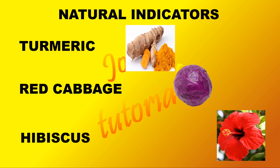There are many natural materials like litmus, extract of red cabbage, turmeric solution, and some colored petals of flowers like hibiscus — they are all used as indicators. Generally we prepare a solution of these materials, dip a paper in it, dry it in the shade, cut it into pieces, and use them to find whether a solution is an acid or a base.